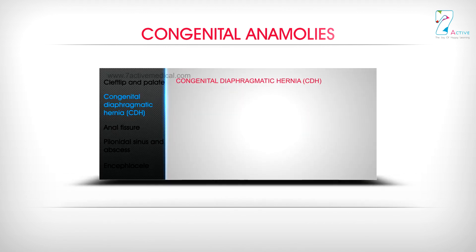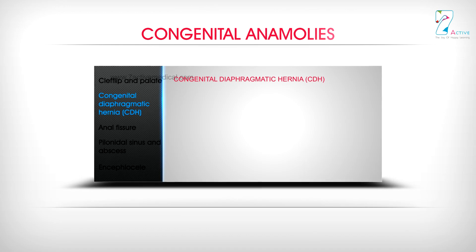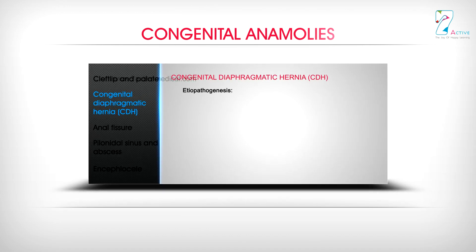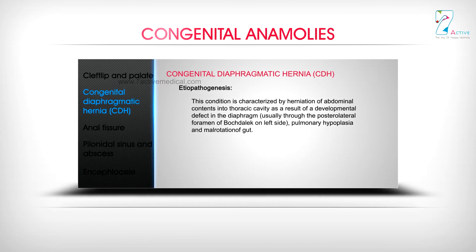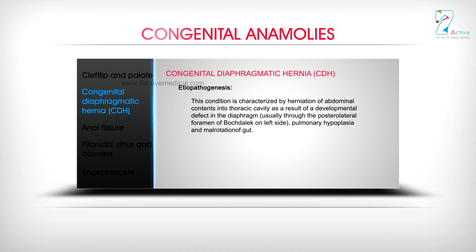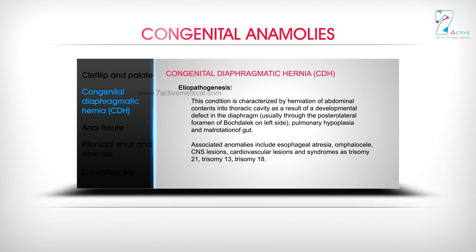Congenital Diaphragmatic Hernia (CDH) — Etiopathogenesis. This condition is characterized by herniation of abdominal contents into the thoracic cavity as a result of a developmental defect in the diaphragm, usually through the posterior lateral foramen of Bochdalek on the left side, causing pulmonary hypoplasia and malrotation of gut. Associated anomalies include esophageal atresia, omphalocele, and CNS lesions.